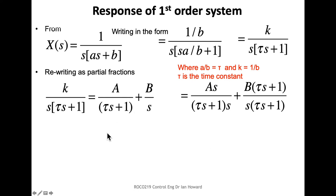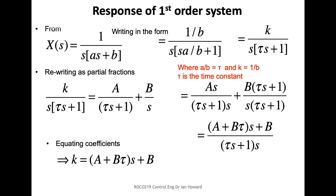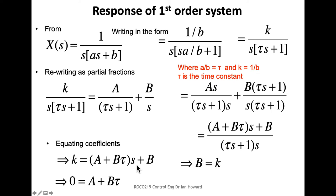We need an s in the denominator of the second term, so we multiply top and bottom by s, giving A*s/(tau*s + 1)*s. For the B/s term, we multiply top and bottom by (tau*s + 1). Now with a common denominator we can equate k to the numerator: A + B*tau*s + B. Equating coefficients, since there are no s terms on the left, B equals k.